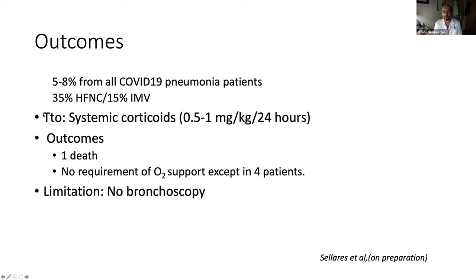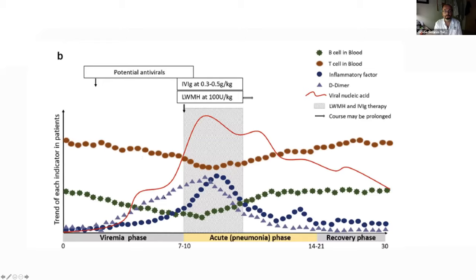All patients in our cohort following our protocol received systemic corticosteroids when this persistence was detected. Only one patient died from this initial group, and no oxygen support was required except in four patients. As a limitation, we didn't perform bronchoscopy initially when this phenotype was detected on CT scan. But interestingly, in recent data, when these patients died and we did biopsy, most had these organizing changes.